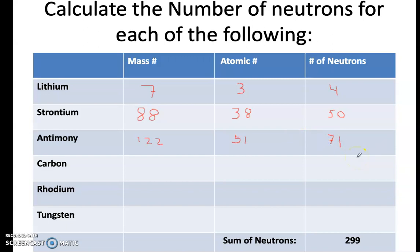Simple as that. Carbon is 12. Atomic number is 6. Subtract those two, you get 6 neutrons.